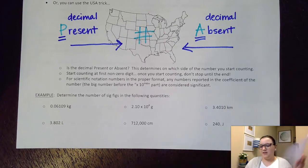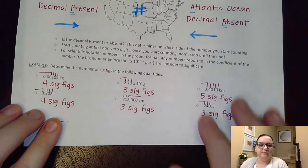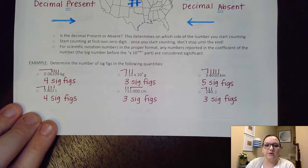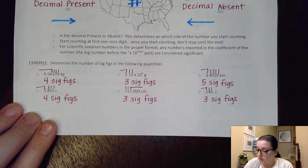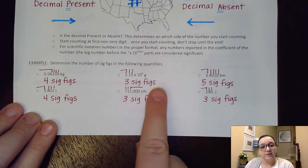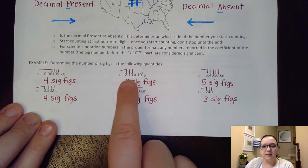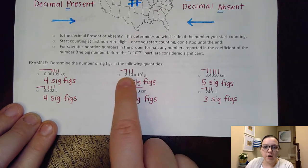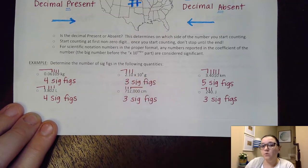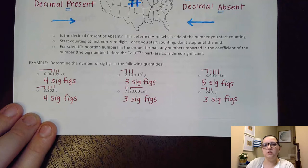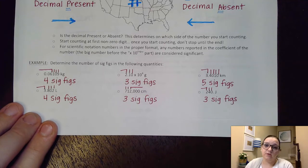Let me put the answers up here so you can see how you did. Here are the answers to those particular examples. I've indicated which direction I'm counting from depending on if the decimal is present or absent. The only one where the decimal was absent was this one, so I counted from the Atlantic Ocean side but wouldn't start until the two. Also, with scientific notation, in the coefficient part — the big part before the times 10 exponent — I'm only reporting significant figures there. That's why I'll sometimes report all my answers in scientific notation, because I can control exactly which numbers are significant.